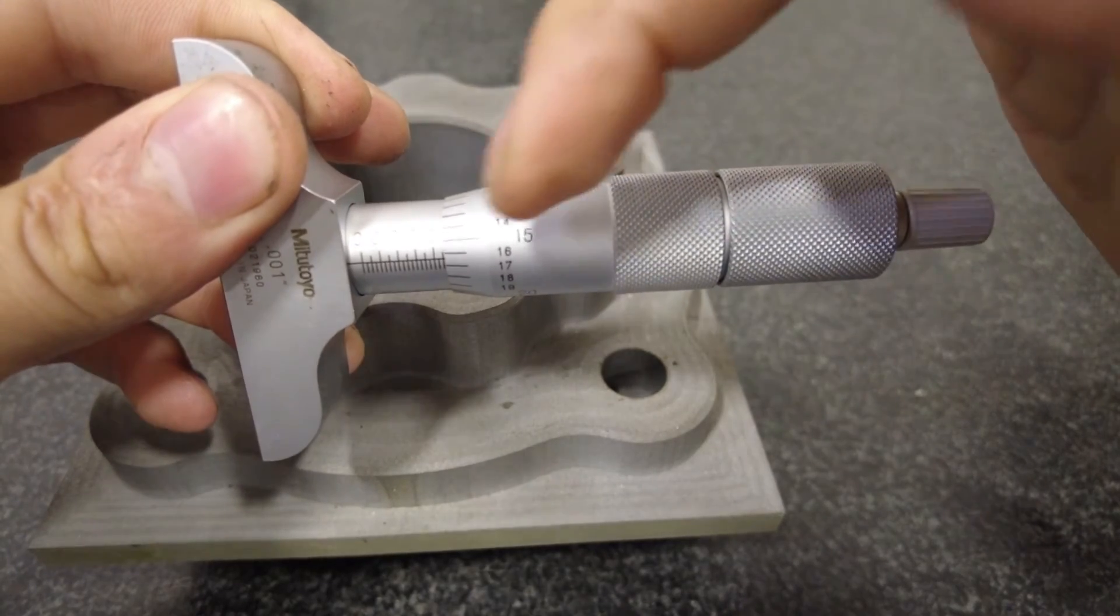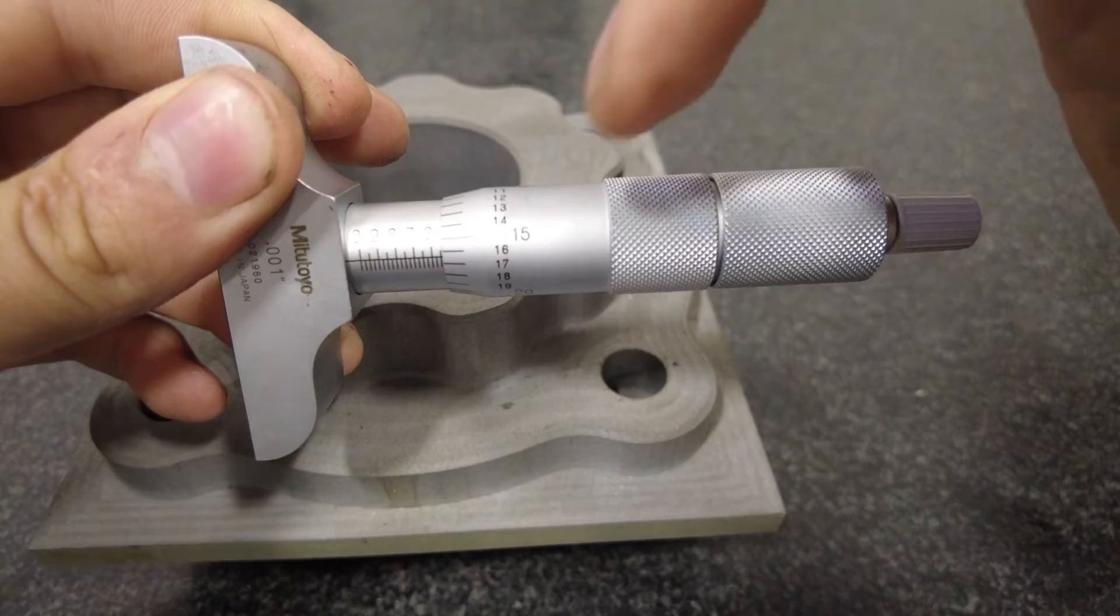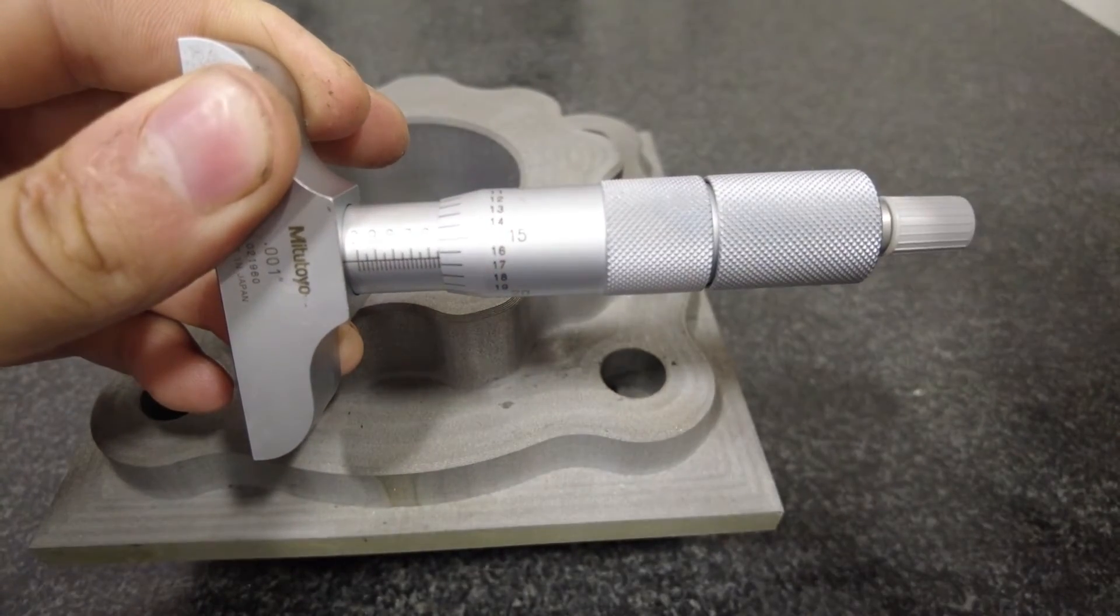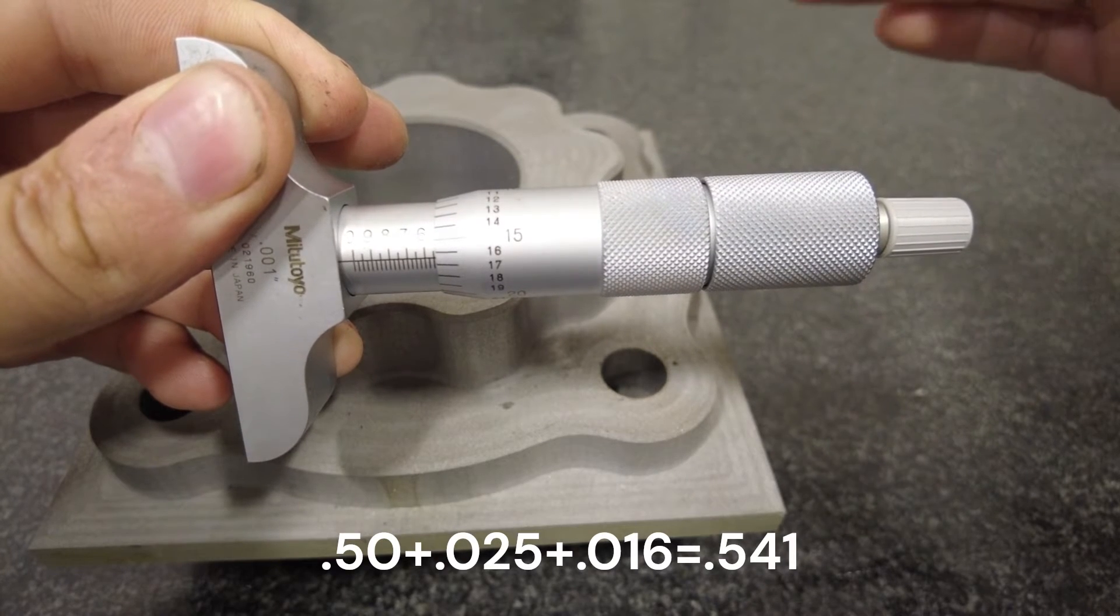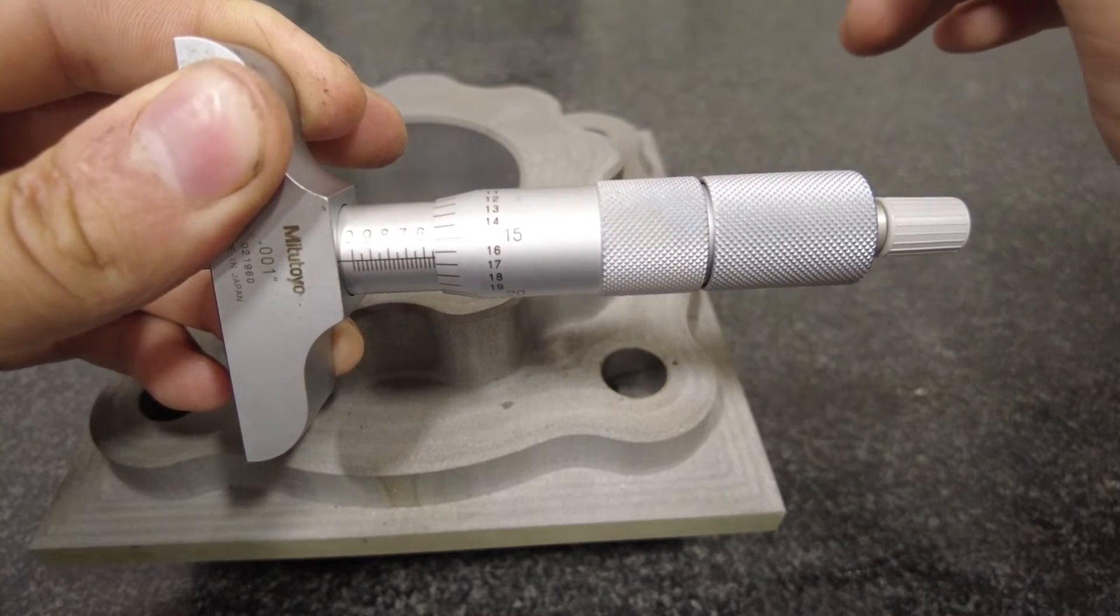You're going to read it backwards so we can see that the five's covered. Then the 25 dash is covered. And then we're showing about 16 on the thimble here. So that's going to be 0.525 plus 16. So we're going to be at 0.541. That's going to be the reading for that.